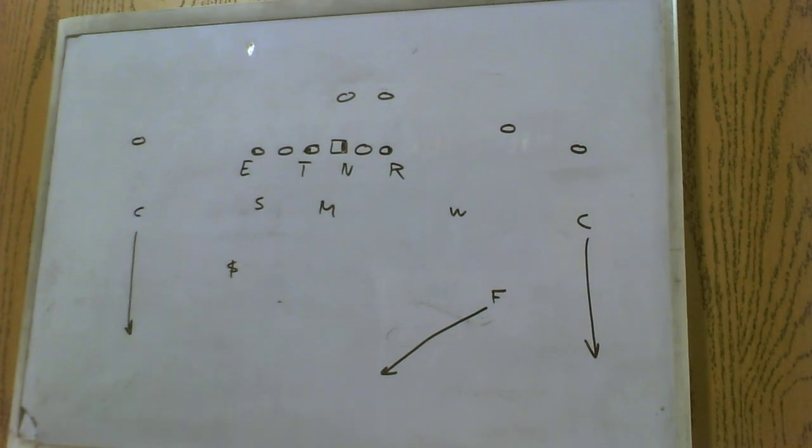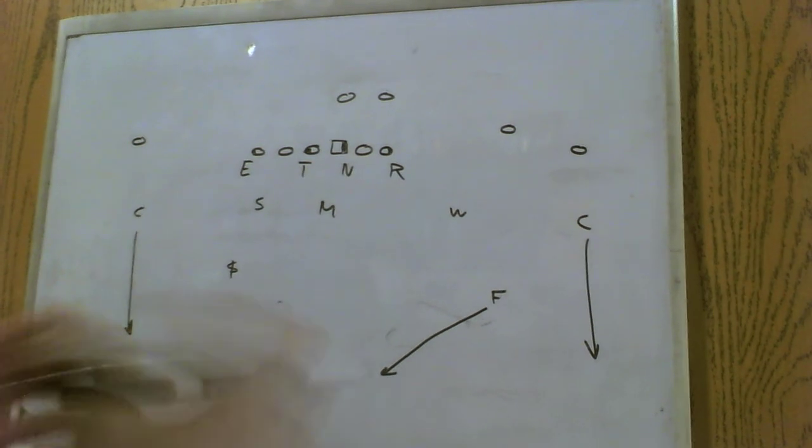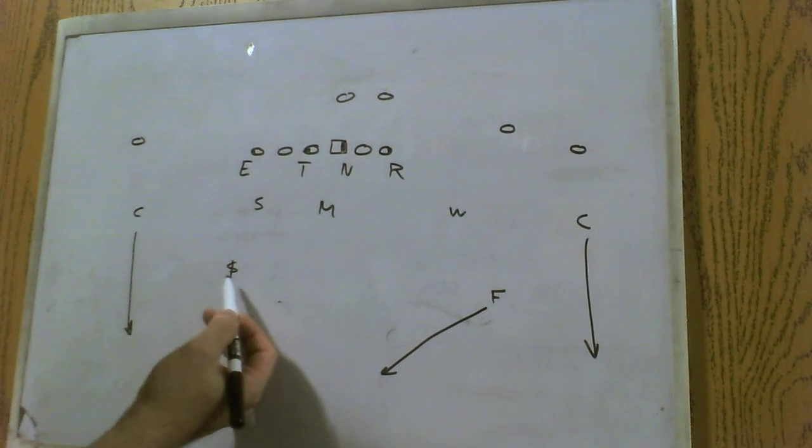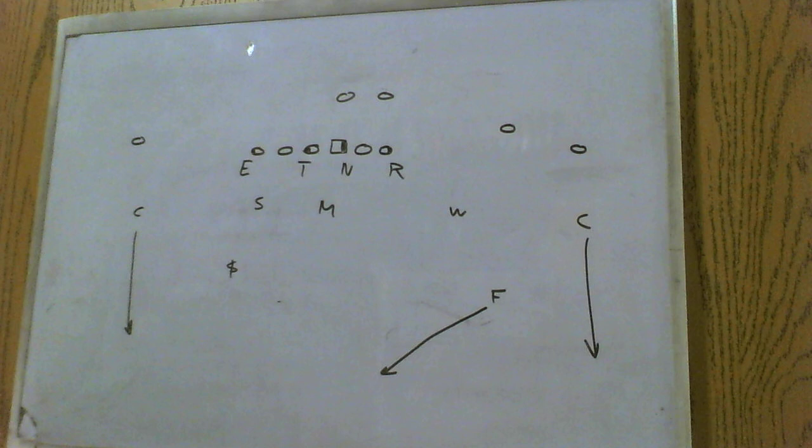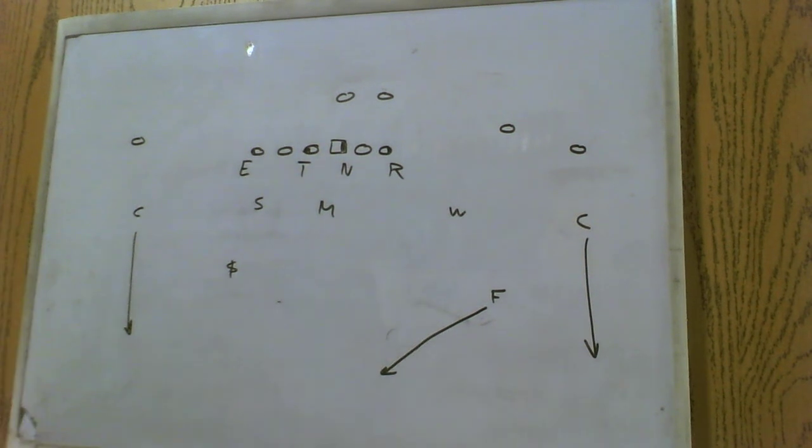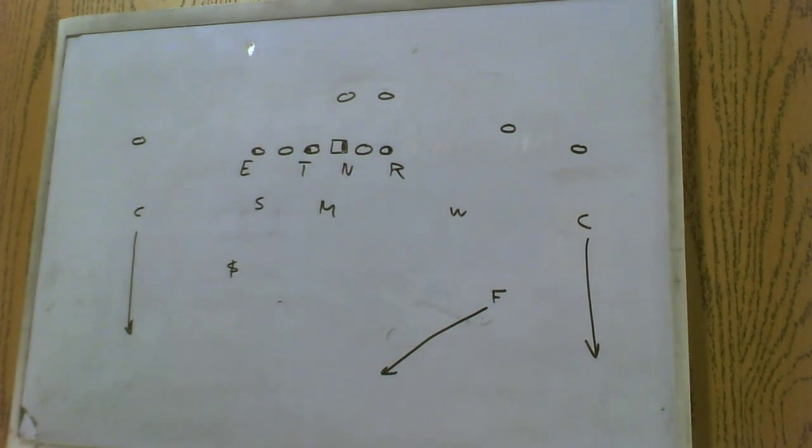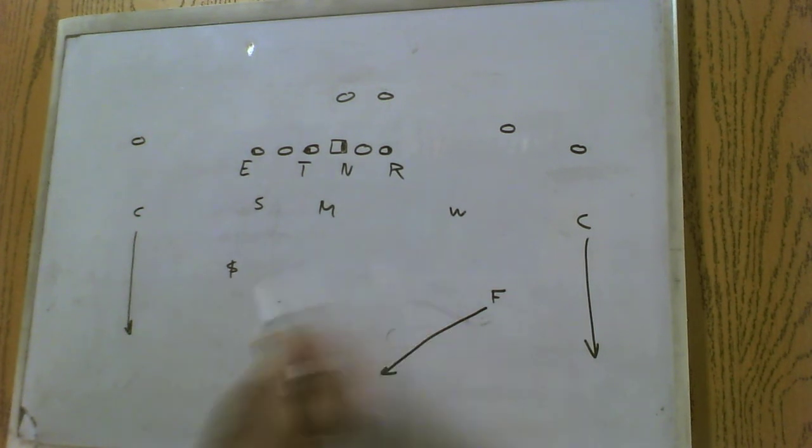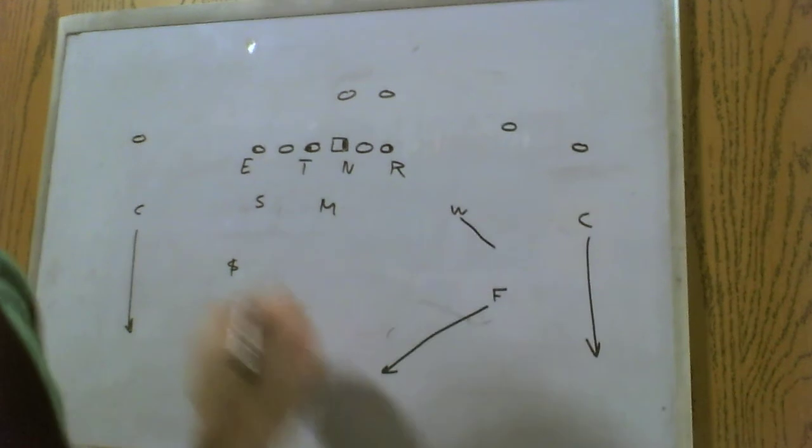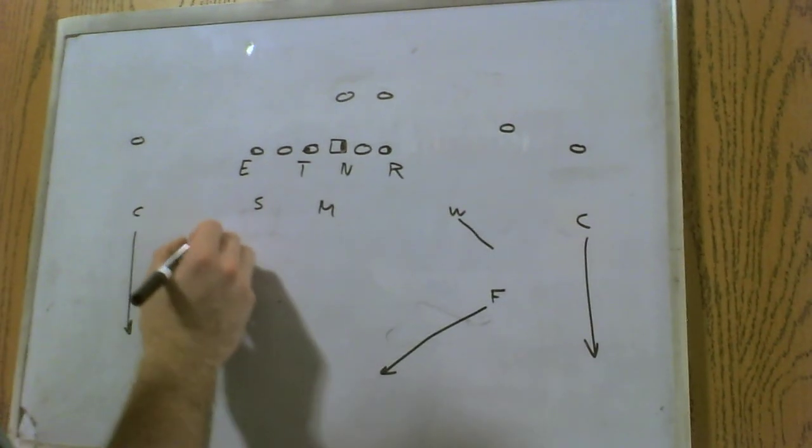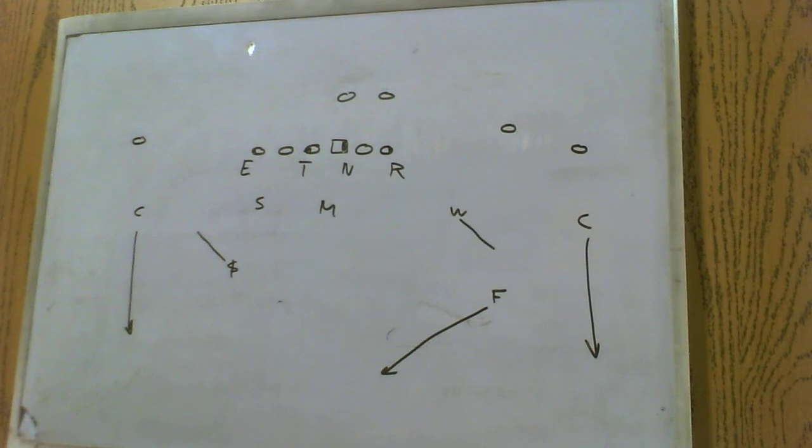So, they'll have anywhere between two or three underneath zone defenders. Let's say for just this basic example, for this first example, we're going to use the strong safety and the will linebacker, again, star linebacker in his defense as the underneath coverage. So, if you're in the underneath coverage of this cover three zone blitz scheme, and there's only two underneath defenders, they are going to drop to a depth of 10 yards. So, let's say that's about right here. You're going to move to a depth of about 10 yards on the hash marks.